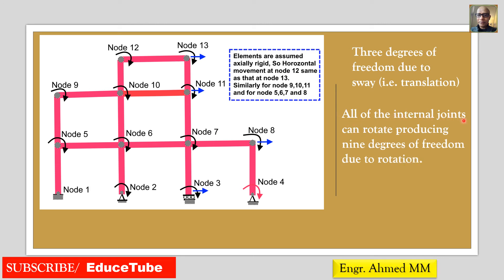Now, all of the internal joints can rotate, producing nine degrees of freedom due to rotation. We can check it — counting the rotational degrees of freedom at the internal joints only, not at the supports: 1, 2, 3, 4, 5, 6, 7, 8, 9. Yes, nine degrees of freedom due to rotation at the internal joints.